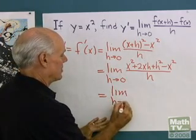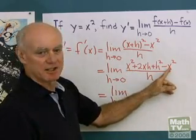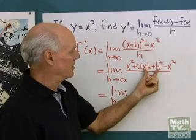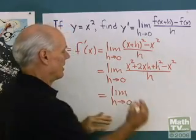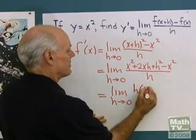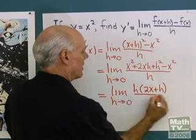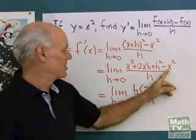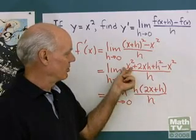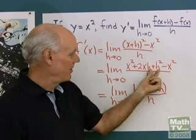Limit as h goes to 0 of, well, let's say I have x squared minus x squared. That's going to be 0, and in these two terms, I have an h, so I'm going to factor that h out, and I'll end up with h times 2x plus h all divided by h. So that's x squared subtract x squared is 0, so there's no term right there. That adds to 0. Then I have these two terms. Both of them have an h.